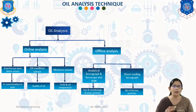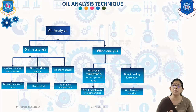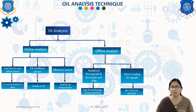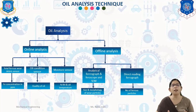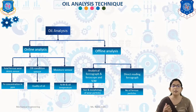Oil analysis is divided into two parts: online and offline analysis. Online analysis is further divided into three parts: total ferrous wear debris sensor, used for measuring ferrous concentration in parts per million (ppm); oil condition sensor, used for checking quality of oil; and moisture sensor, used for measuring percentage of relative humidity and oil temperature. Offline analysis is further divided into two parts: analytical ferrography and ferroscope and scanning electron microscope (SEM), used for measuring size and morphology of wear particles; and direct reading ferrograph, used for measuring number of ferrous particles.